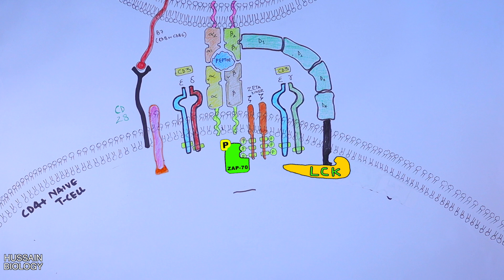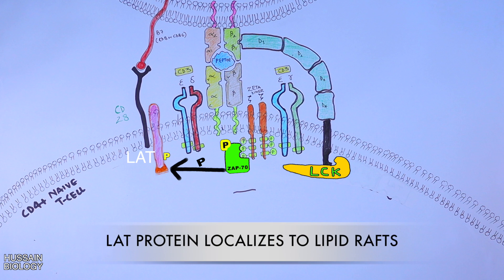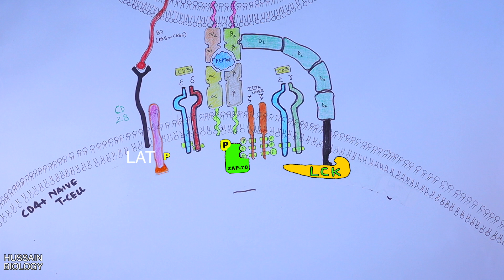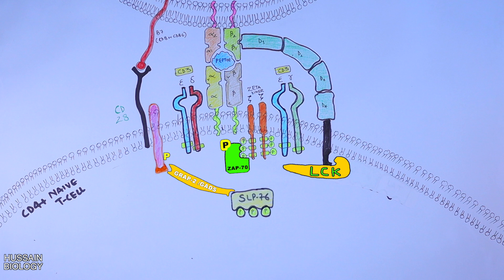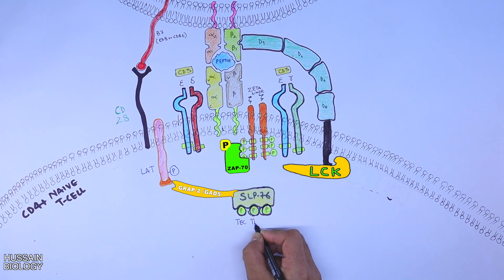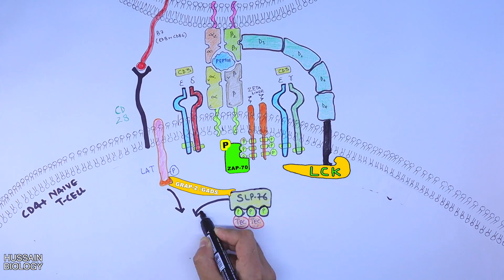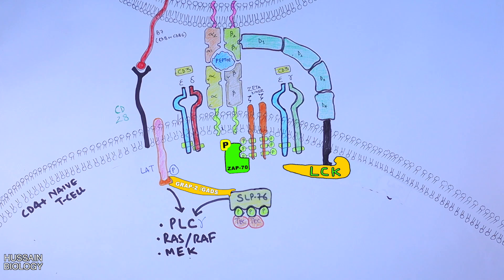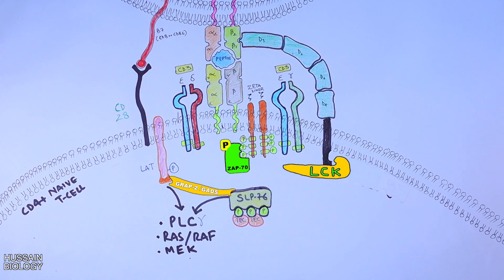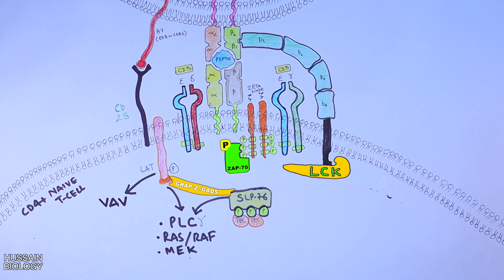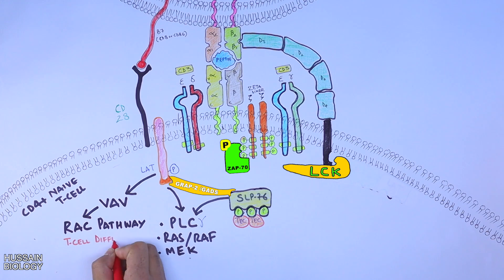Active ZAP70 then phosphorylates the LAT protein — the Linker of Activated T cells. The LAT protein activates and recruits SLP76, which binds LAT through the GRAP2 (GADS) protein. SLP76 then binds the TEC protein, driving many different pathways in association with LAT: the PLC pathway is activated, the RAS pathway is activated, and the MAPK pathway is activated — all promoting T cell proliferation and development. LAT also activates VAV protein, which drives the RAC pathway mediating T cell differentiation.